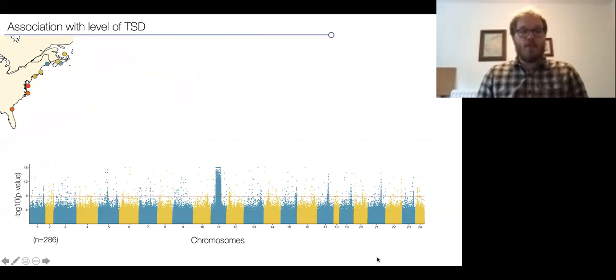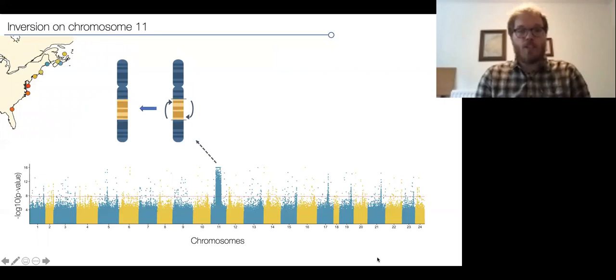We went out and wanted to know which genomic regions determine the level of temperature-dependent sex determination to perform a GWAS using a subset of individuals. In this Manhattan plot of about 24 chromosomes, we can see that many regions show association with the level of temperature-dependent sex determination, but in particular, one region on chromosome 11, which we know is a large-scale inversion which is clinal, differs in frequency from south to north.